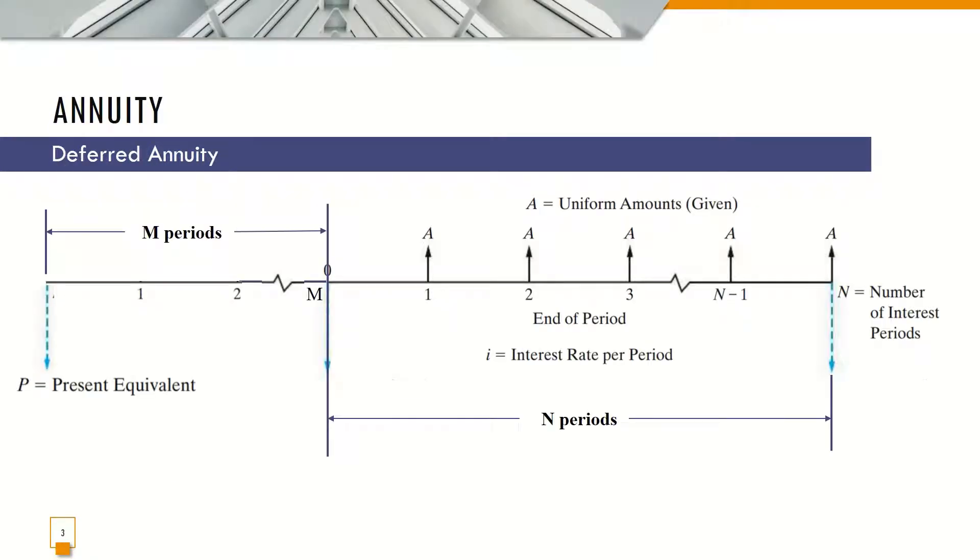First, for the Deferred Annuity, this is the cash flow diagram. For the M Periods, there are periods wherein we have no annuity payments. And then, for N Periods, that is the time wherein the annuity is being conducted.